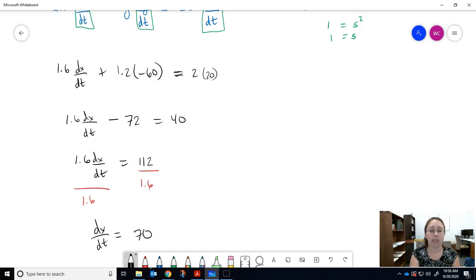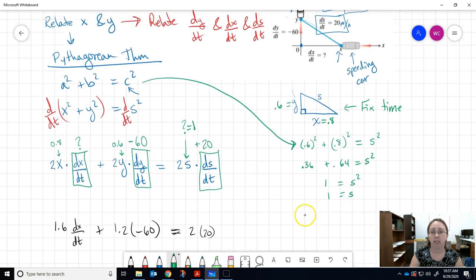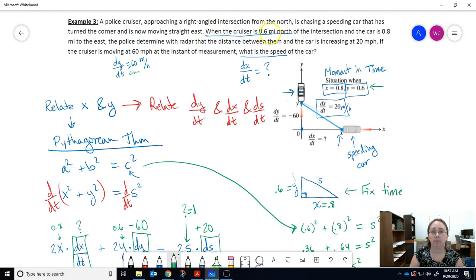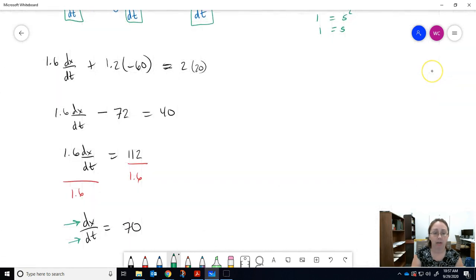What are the units? Remember x is a distance, t is a time. So in our problem what were we using to measure distance and time? Distance is miles and time is hours, so this would be miles per hour. That means we found how fast the speeding car is traveling. Speed of speeding car.